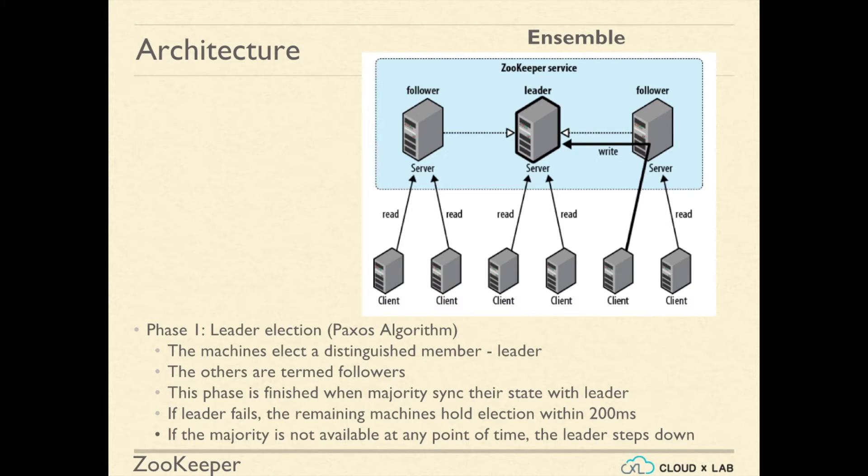If at any point the leader fails, the rest of the machines of the Ensemble hold an election within 200 milliseconds. If the majority of machines are not available at any point of time, the leader will automatically step down.